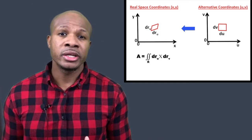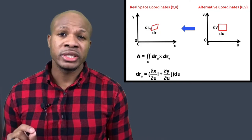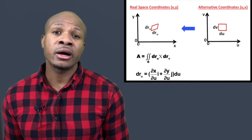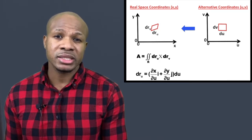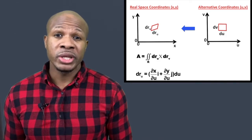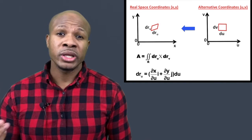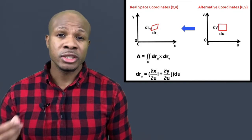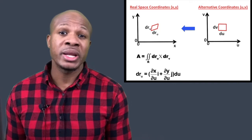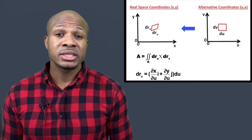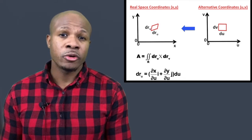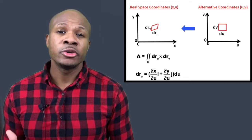To solve for dr_u, we look at the segment created in real space by a change in u. We need to see how a change in u affects x and y — the real space coordinates. The i-component of dr_u is the partial derivative dx/du, representing how x changes when u changes, and the j-component is dy/du.